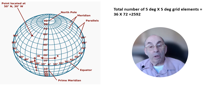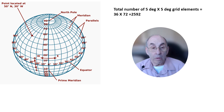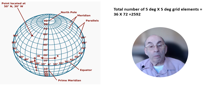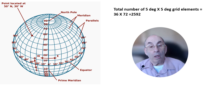Since there are 360 degrees of longitude and 180 degrees of latitude on the sphere, the total number of these smaller grid elements is 36 times 72, or 2,592.